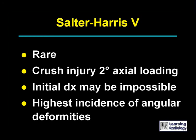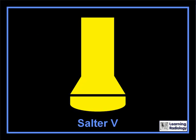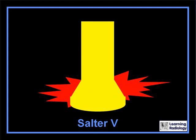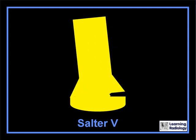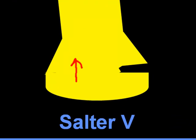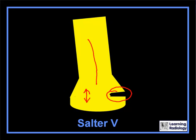Salter-Harris 5 fractures are rare. They are crush or compression injuries secondary to axial loading rather than shear injuries to the epiphyseal plate. The initial diagnosis may be impossible, and they may only be visible after complications ensue. Salter-Harris 5 fractures have the highest incidence of angular deformities. Axial loading crushes or compresses the epiphyseal plate, which may produce early fusion in one area and no fusion in another, resulting in an angular deformity.